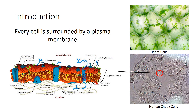Cellular membranes are important because they surround every single living cell on this planet. It doesn't matter if you're a bacteria, an archaean, a plant cell, or an animal cell like these human cheek cells — you're surrounded by a plasma membrane.